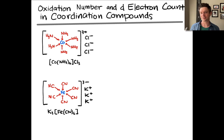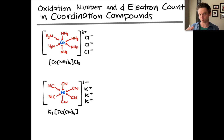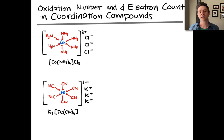This is going to be really important later — the d electron count in particular — because we're going to learn what happens to the d orbitals when the transition metal cation is surrounded by a set of ligands. It's rather surprising and interesting and can explain a lot of the properties of coordination compounds. So the d electron count is important, and it comes from the oxidation number, which is a prerequisite for that.